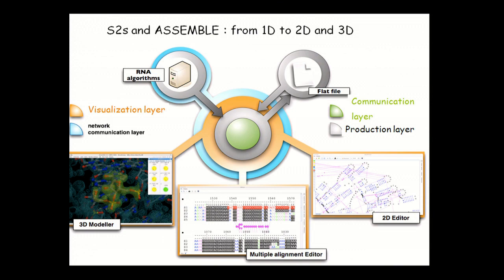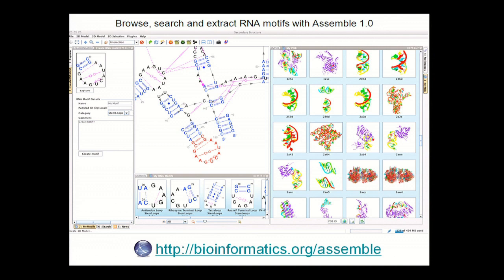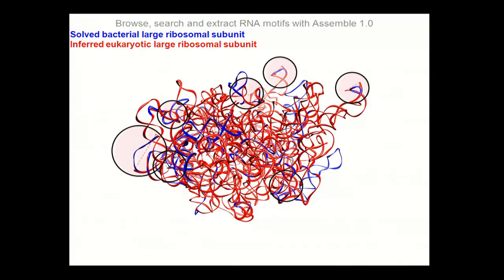Once you have modules, you can move to modeling by modular assembly. We developed an assembly program with multiple layers: a visualization layer, a network communication layer, and a prediction layer. You have alignment and multiple alignments — 1D, 2D, and 3D — in which you can compute modules or assemble them, and put them into electron density from electron microscopy. Every time you manipulate the 3D, you see it update in the 2D editor — they all talk to each other. It is interactive, not automatic: you are an actor, not a spectator.